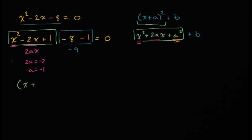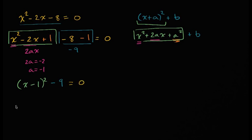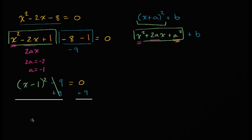So, x plus n is minus 1. So, plus minus. So you have to write two rows. So you can write x minus 1, minus 9, equal to 0. If you are not familiar with this, you can write 2 rows. x minus 2. We can write 2 rows.